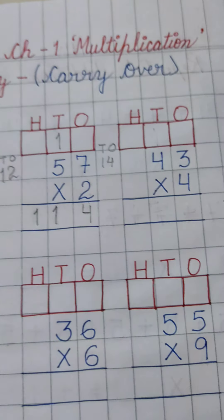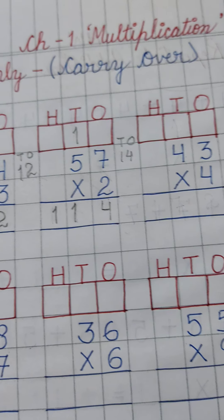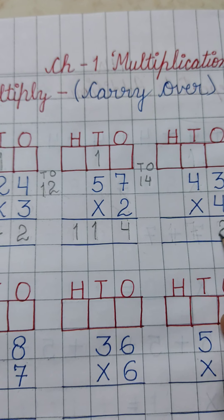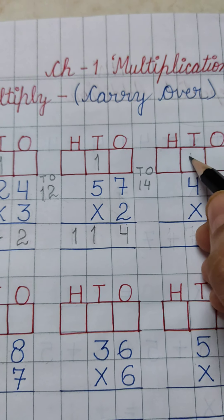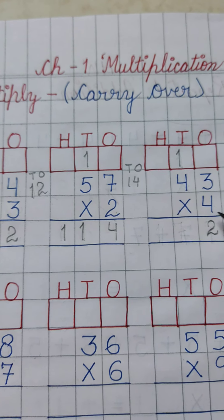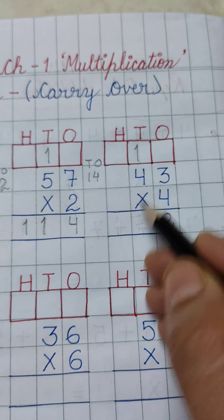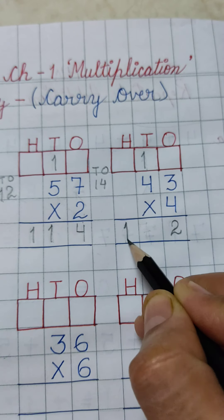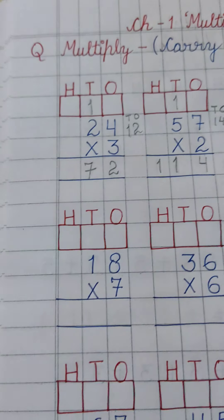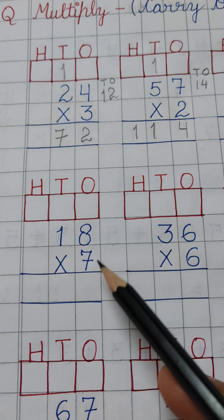Now the third part: 43 multiply by 4. 4 3's are 12, and we carry over 1 to the 10's place. Then 4 4's are 16, plus 1 is 17. The next is 18 multiply by 7.